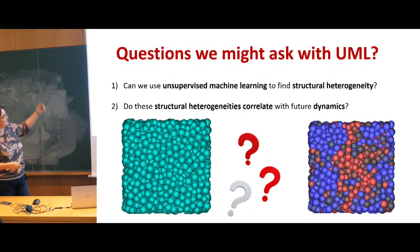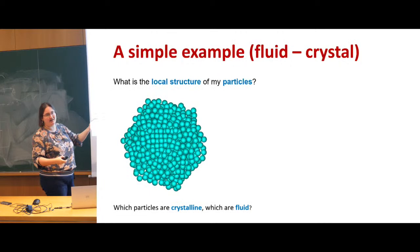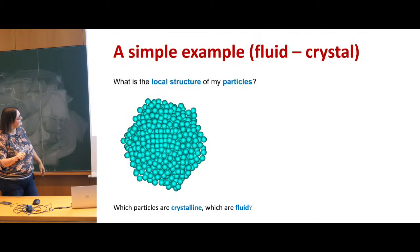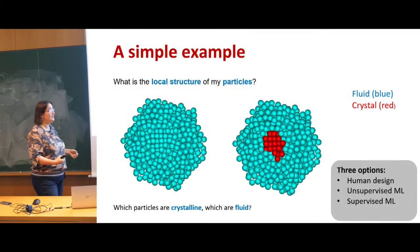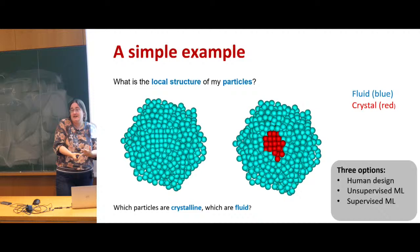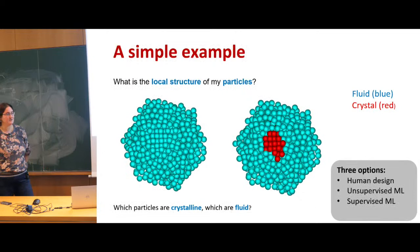I'm going to ask the unsupervised algorithm: can you find the largest structural variations in this system? I'll pretend for a minute I know nothing about the dynamics. Then I can use that to say, are these structural variations somehow correlated to the dynamical variations in the system? So it's a two-part question: first, what are the largest structural variations? And secondarily, are these structural variations that an unsupervised machine learning algorithm determines somehow connected to the dynamics?